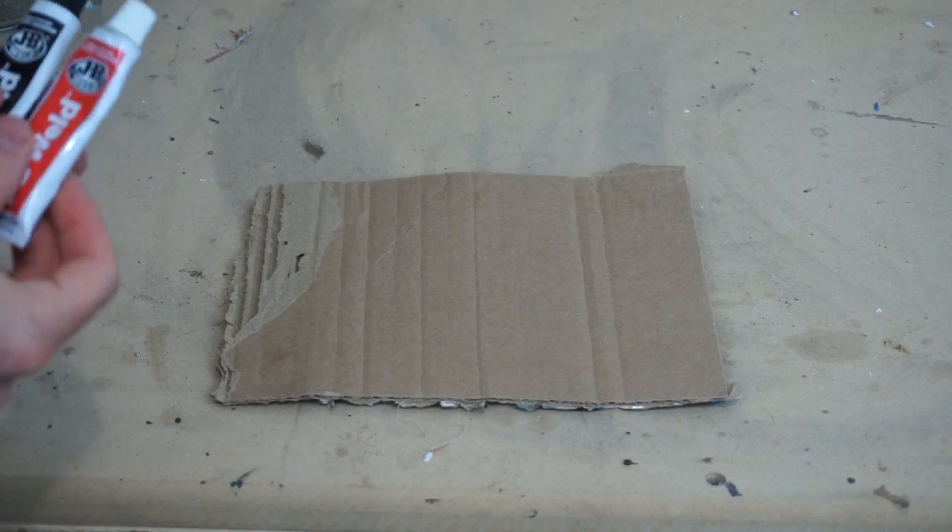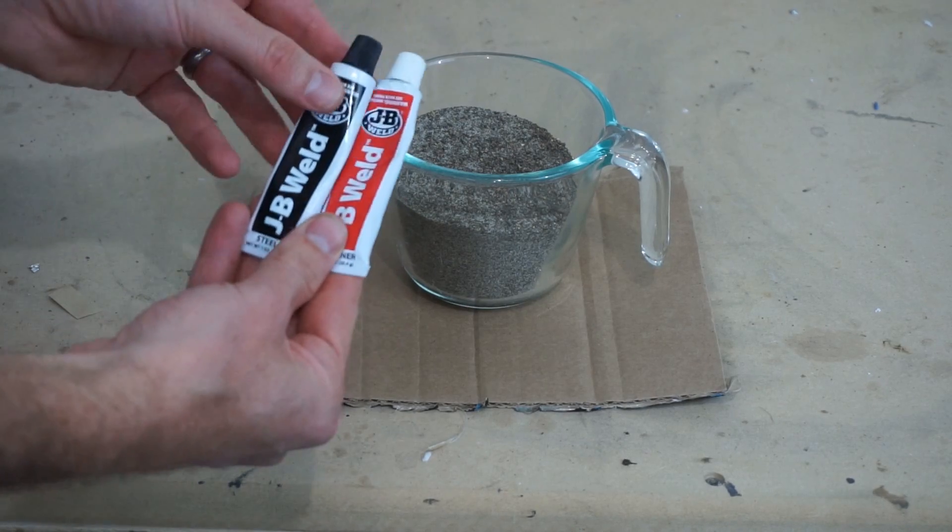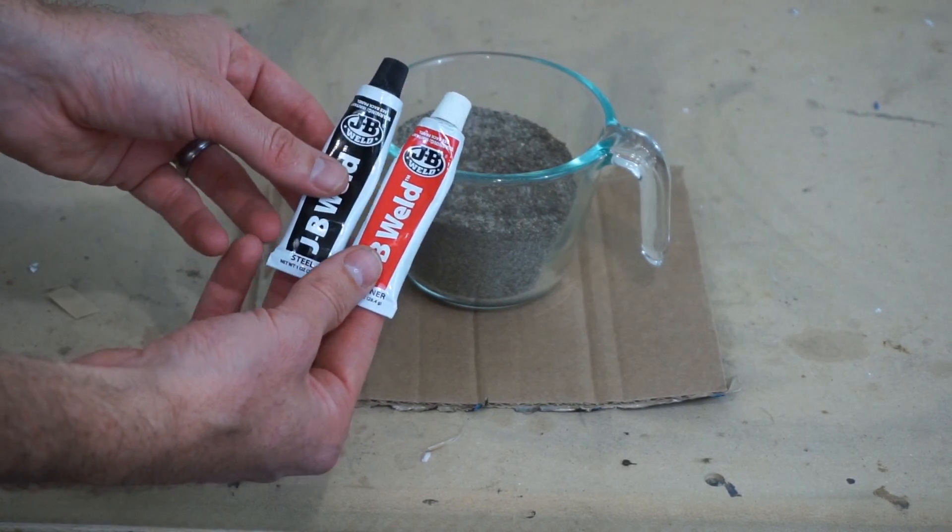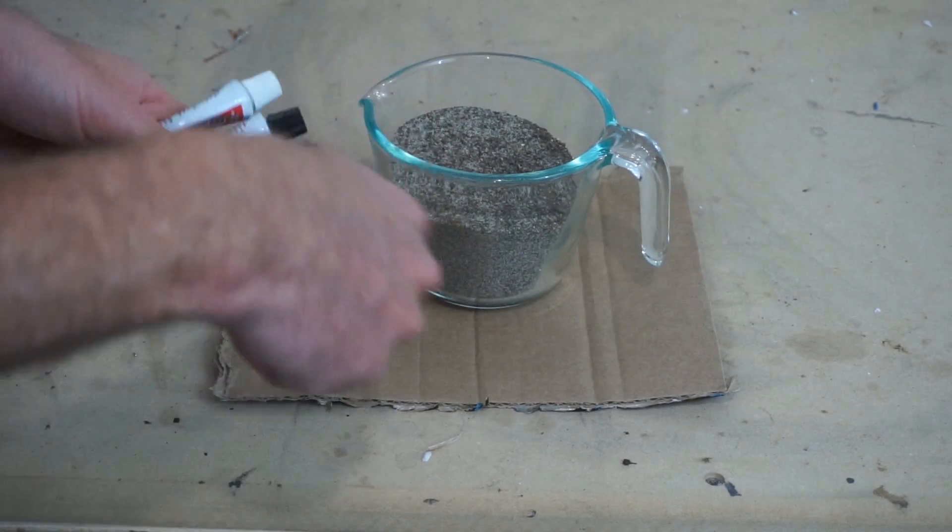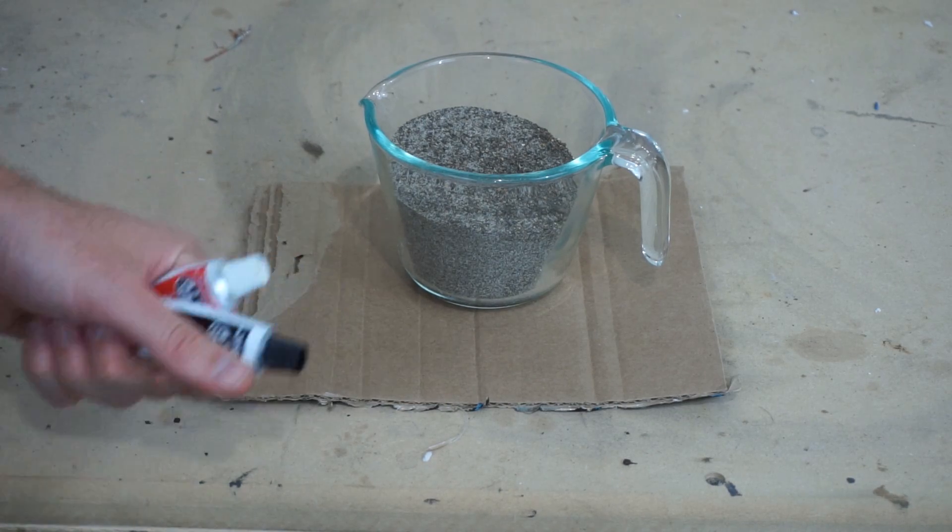Alright everybody, today I'm gonna be crushing some sand that's mixed with JB Weld. So JB Weld is an epoxy adhesive. I'm going to mix the A and B parts together, mix it in the sand, harden it, and let's crush it and see what happens.